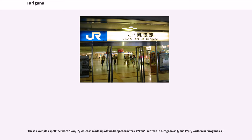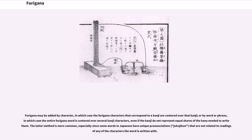These examples spell the word kanji, which is made up of two kanji characters: kan, written in hiragana, and ji, written in hiragana. Furigana may be added by character, in which case the furigana characters that correspond to a kanji are centered over that kanji, or by word or phrase, in which case the entire furigana word is centered over several kanji characters, even if the kanji do not represent equal shares. The latter method is more common, especially since some words in Japanese have unique pronunciations not related to readings of any of the characters the word is written with.